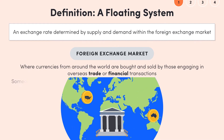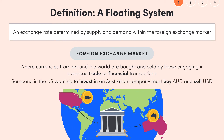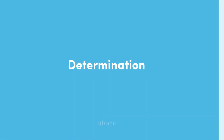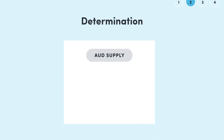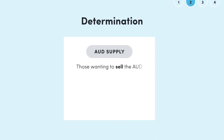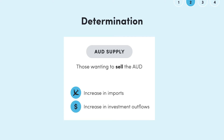If someone in the United States wants to invest in an Australian company, that investor needs to buy Australian dollars. To fund that purchase they'll need to sell some American dollars. Australian dollar supply refers to those who want to sell Australian dollars, so an increase in imports and an increase in investment outflows both constitute an increase in Australian dollar supply. This is because Australians seeking to buy from or invest in overseas markets must sell Australian dollars to buy the necessary foreign currencies.